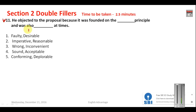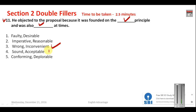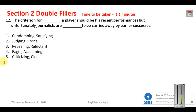Question number eleven: 'He objected to the proposal because it was founded on the __ principle and was also __ at times.' He objected, so something was wrong — you need a negative word in both blanks. Any option that has two negative words will be the answer. The third option is correct because both words are negative — 'wrong' and 'inconvenient'. The sentence reads: 'He objected to the proposal because it was founded on the wrong principle and was also inconvenient at times.' Your answer is 3.